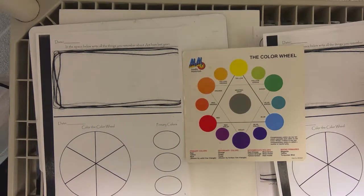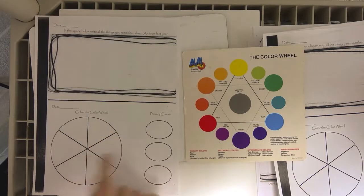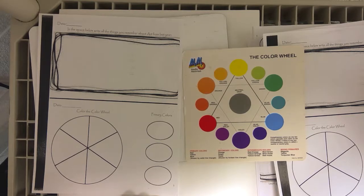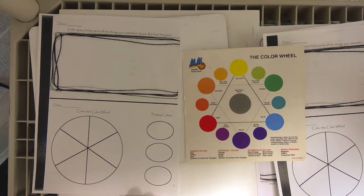Okay boys and girls, today we're going to talk about the color wheel and the primary colors. Does anybody know what three colors are the primary colors? That's right, yellow, blue, and red are the primary colors.